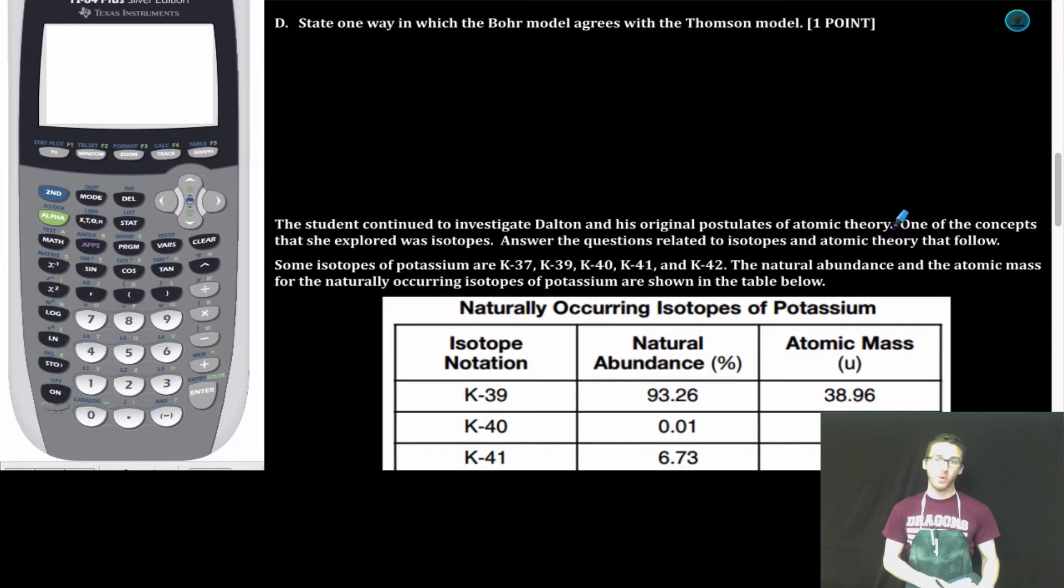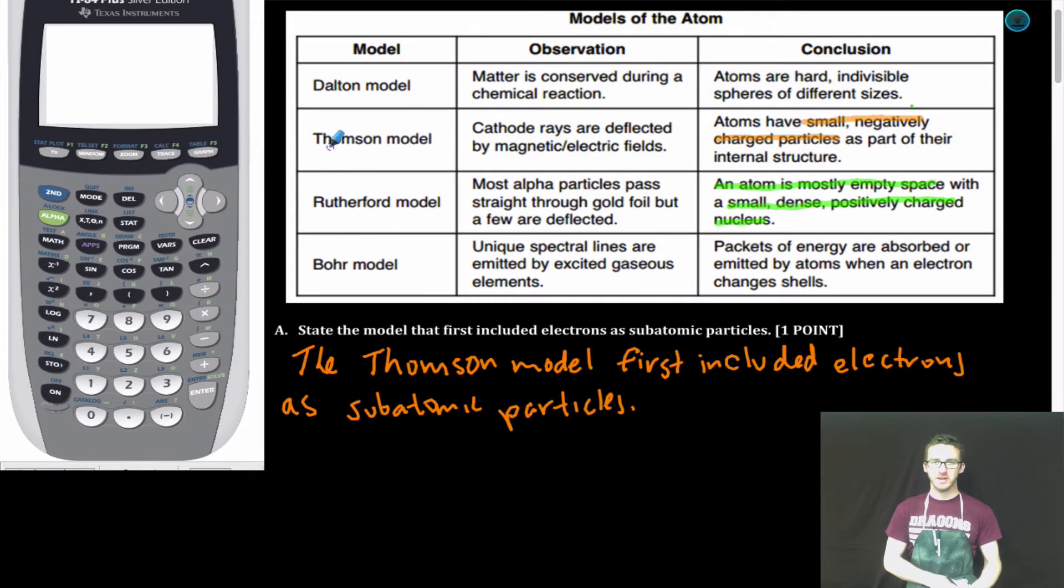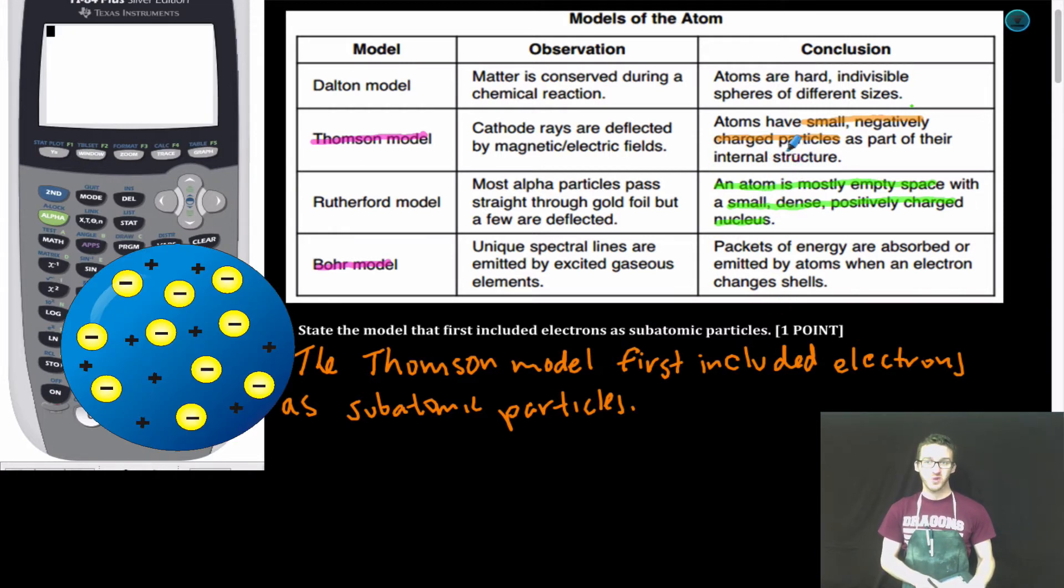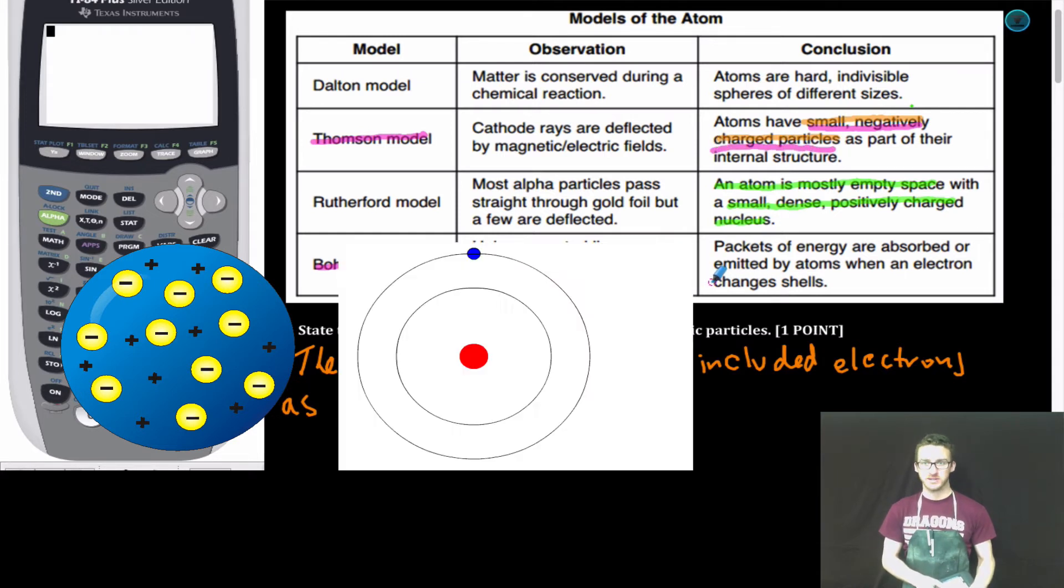Part D. State one way in which the Bohr model agrees with the Thomson model. Let's take a look at these two models and think about what they have in agreement with one another. Recall that the Thomson model is where we identified that atoms have small, negatively charged particles, which we now call electrons. The Bohr model also believes that atoms have electrons.